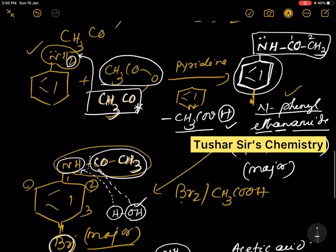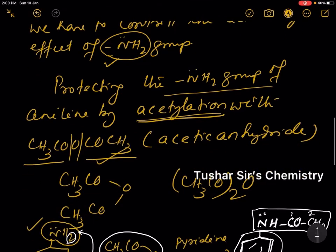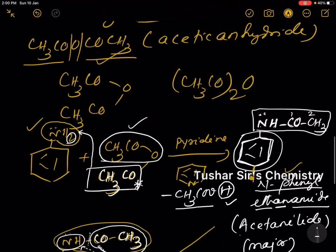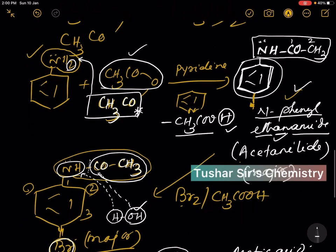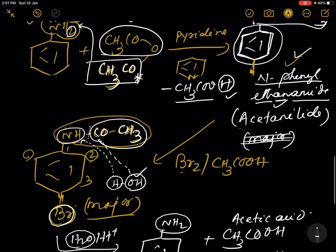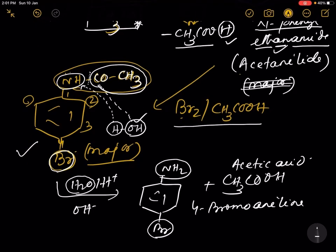To summarize: aniline on treatment with acetic anhydride gives N-phenyl ethanamide (acetanilide), which on treatment with bromine and acetic acid gives a para-substituted acetanilide, which on hydrolysis gives para-bromoaniline.